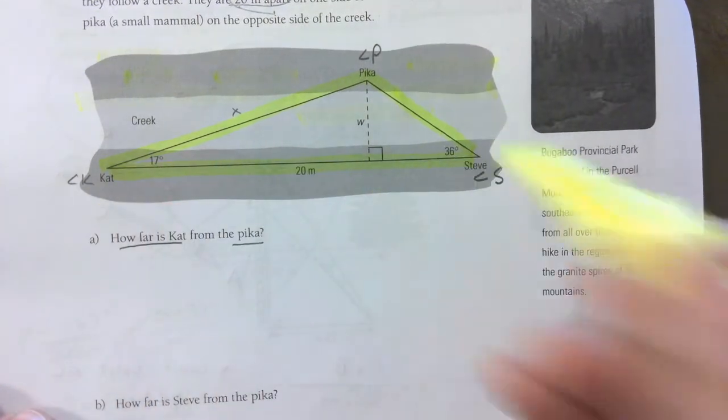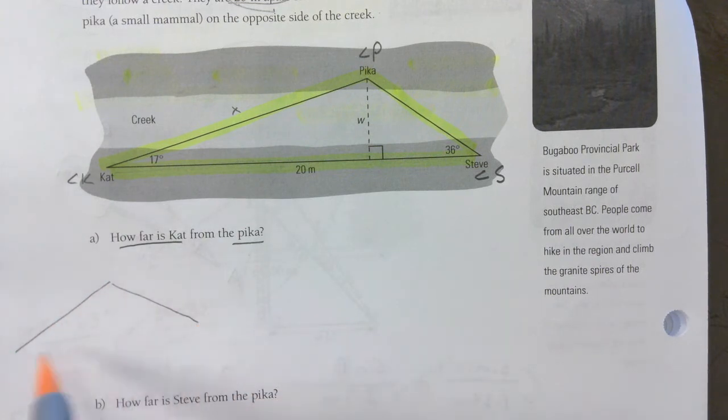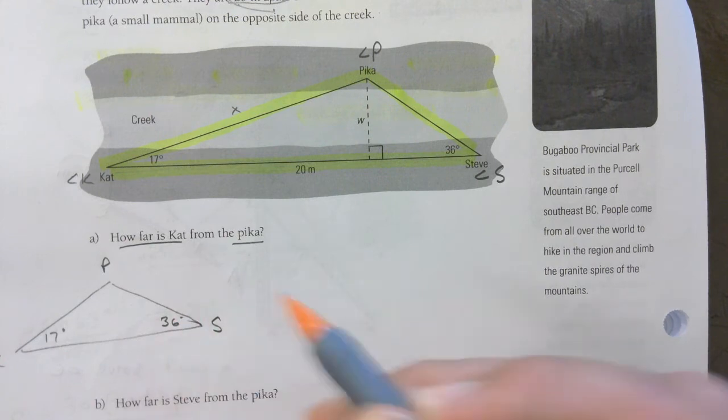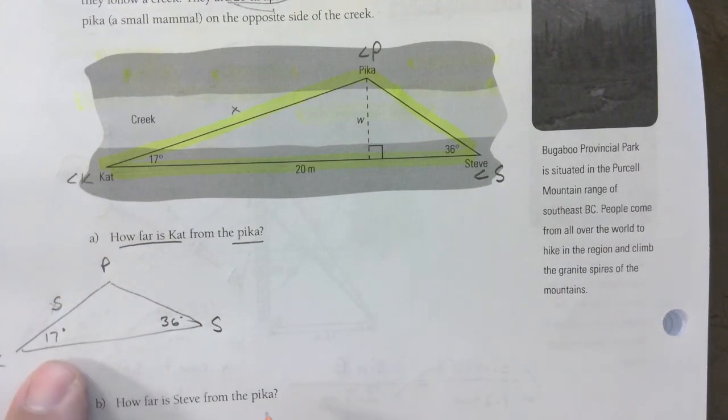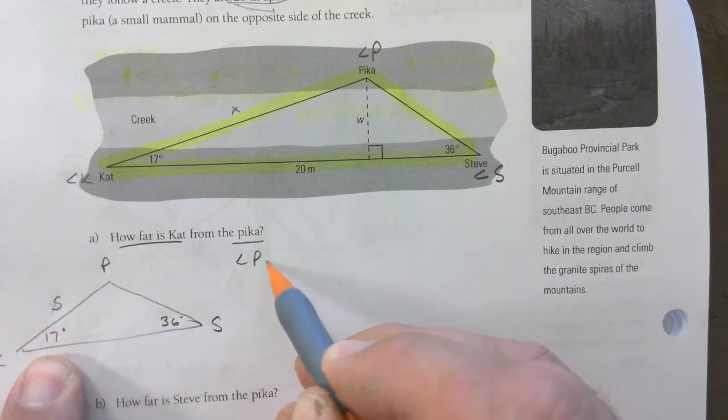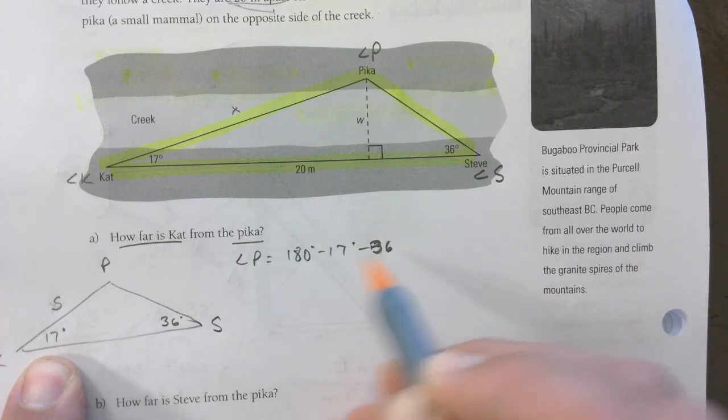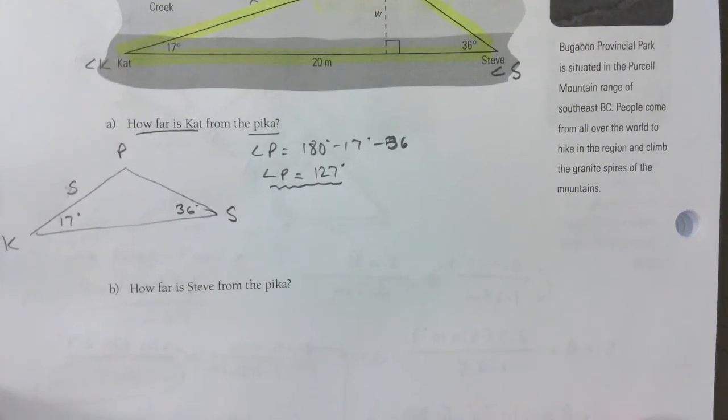If you look at this triangle here, K, P, S, we know that this is 17, this is 36. You can easily find angle P, and this is my unknown here, which I should call—you can call it x, you can call it lowercase s. But angle P is 180 minus 17 minus 36. So angle P is going to be 127 degrees—important to me. And now I have a pair because I know that this is 20 meters, and if this is 127 here, I have a pair. I can use sine law.